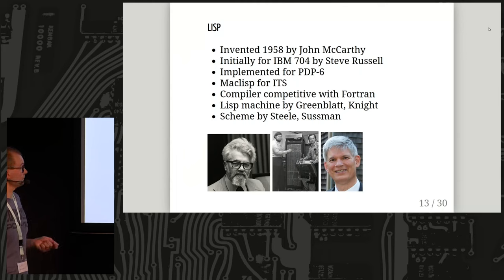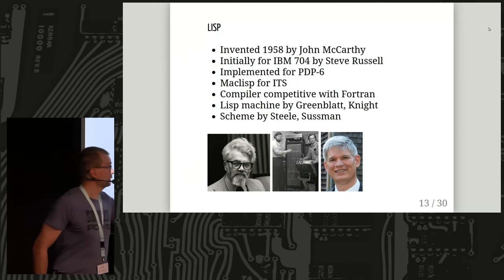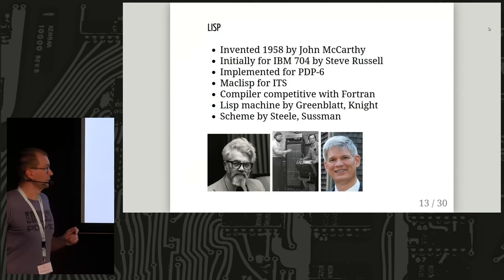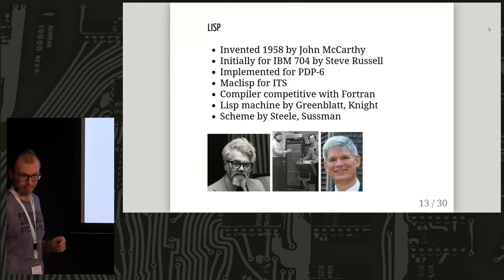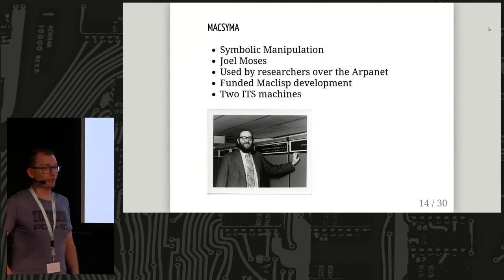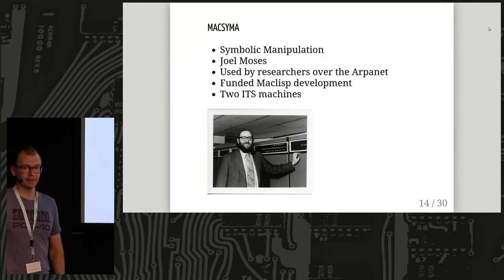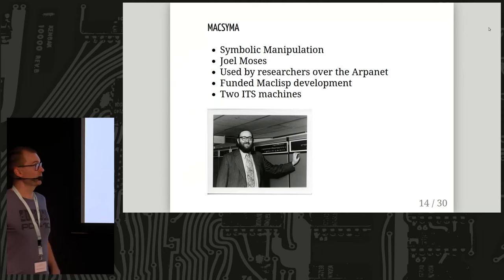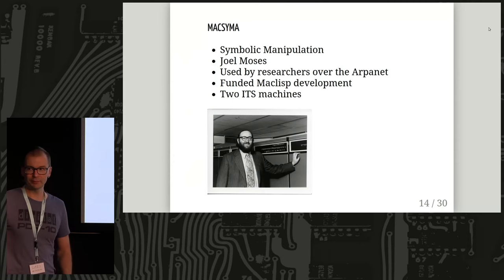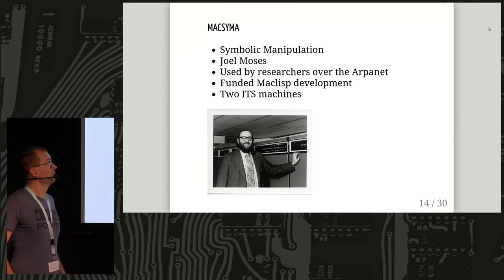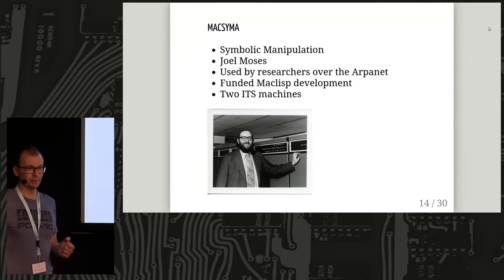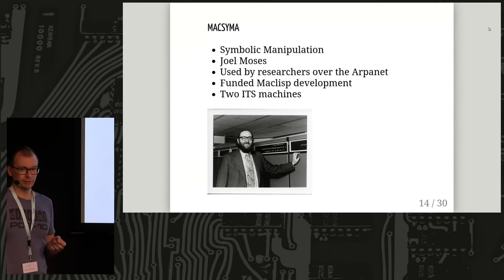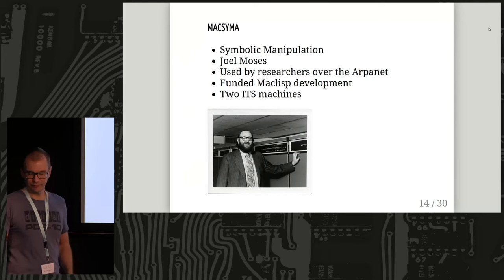MacLisp had a great compiler. Greenblatt on the right and Tom Knight on the left made the Lisp machine, and Guy Steele invented Scheme. Macsyma is a program for symbolic mathematical manipulation, kind of like MATLAB or Wolfram Alpha. It was mainly written by Joel Moses. Lots of people from all over the ARPA network logged in from remote sites to use it. It was written in MacLisp, so there was a lot of funding for MacLisp maintenance — so important that they got two PDP-10s just for Lisp and Macsyma research.